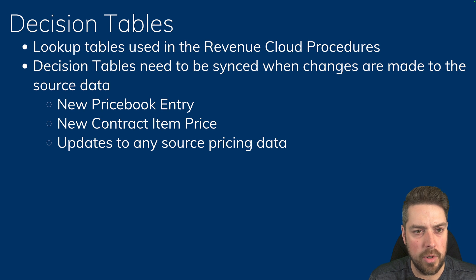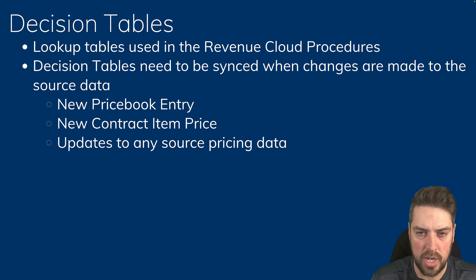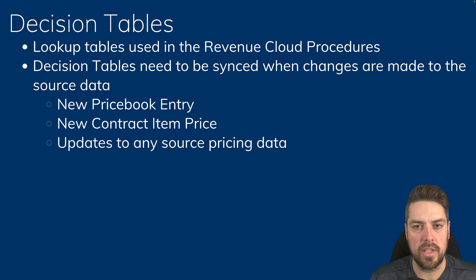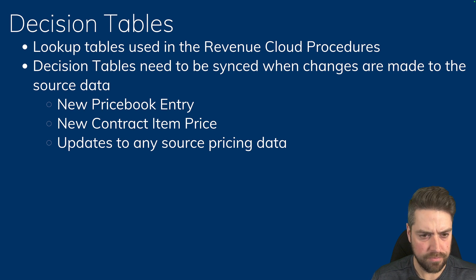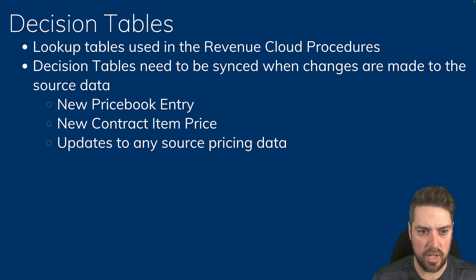Decision tables are built on top of source data coming from standard or custom objects. When changes are made to that source data, the decision table needs to be refreshed. For example, if you create a new product or a new price book entry, you need to do a refresh on the price book entry decision table.